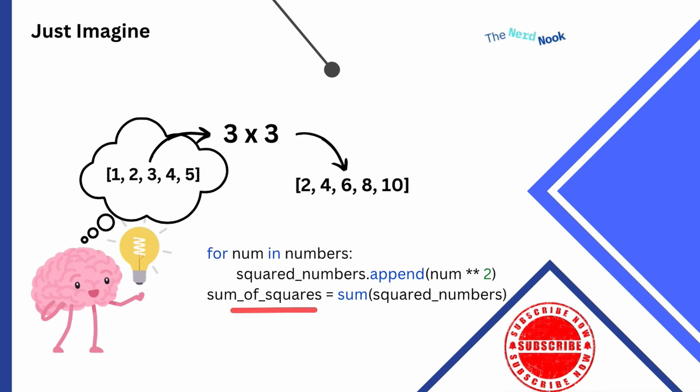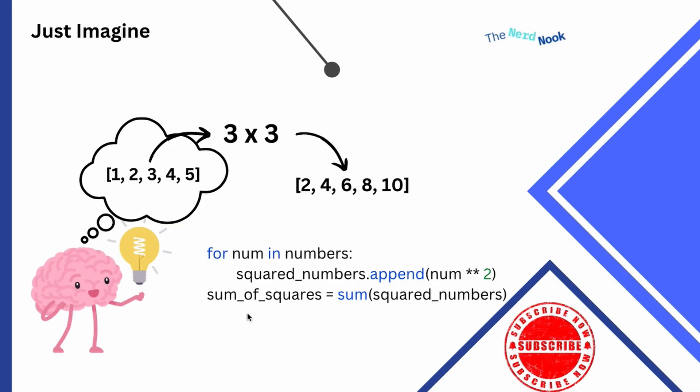Then in this example, I'm taking this new list and I'm going to add together all the numbers in that list. So we can turn this into a comprehension too, which I'm going to show you.